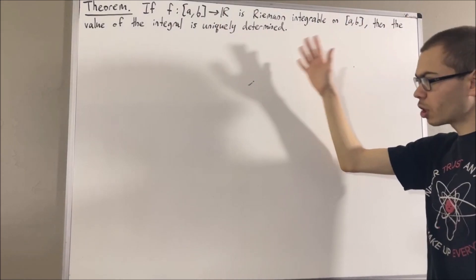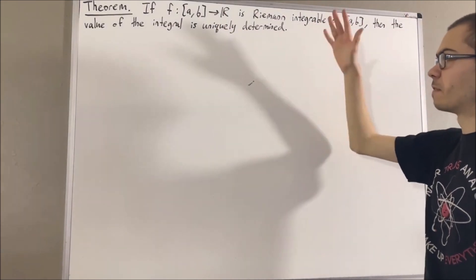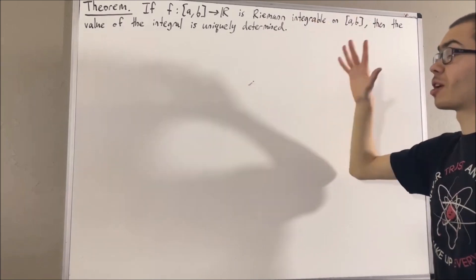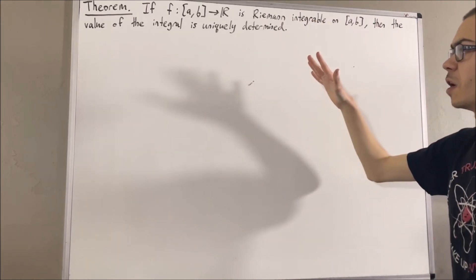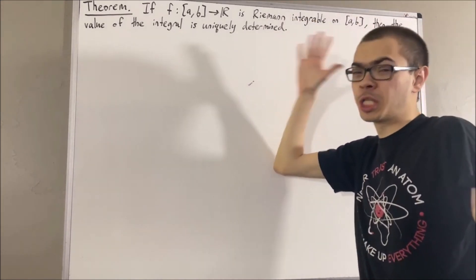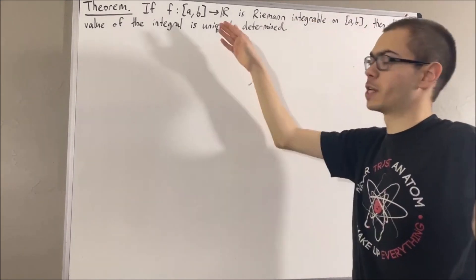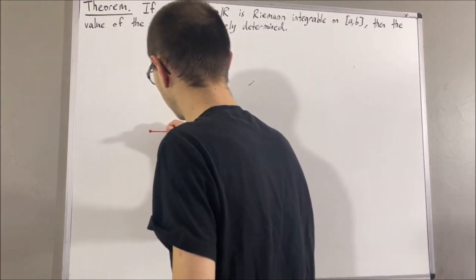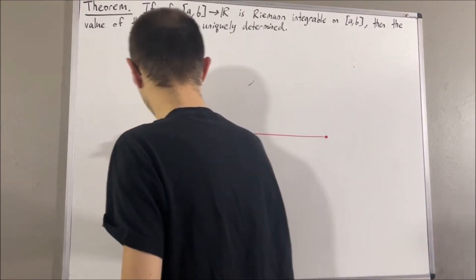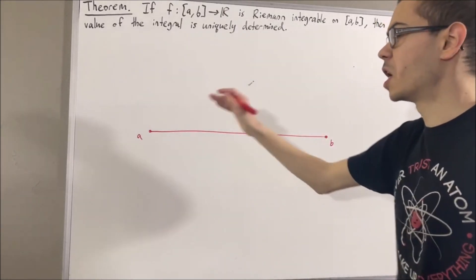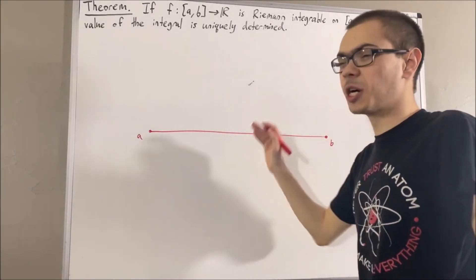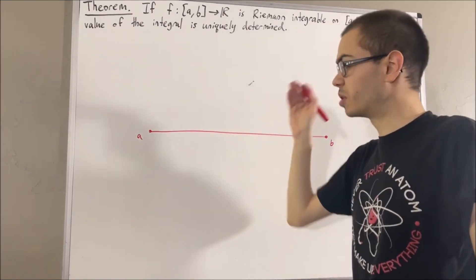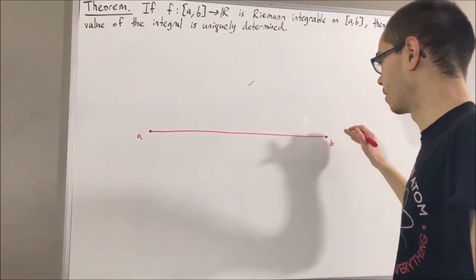We're going to remind ourselves of the definition of the Riemann integral, but before we do that, let's first remind ourselves of the definition of a partition of an interval. If we consider our closed interval [a, b], then a partition of [a, b] is a collection of non-overlapping closed intervals whose union is [a, b].